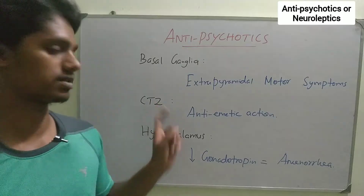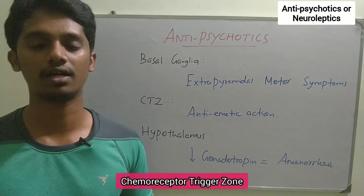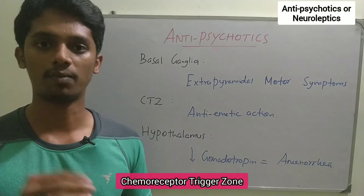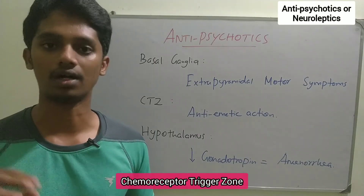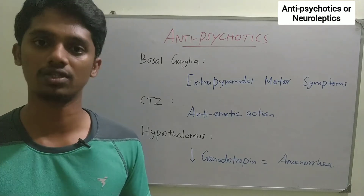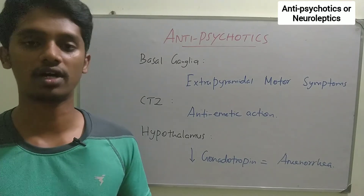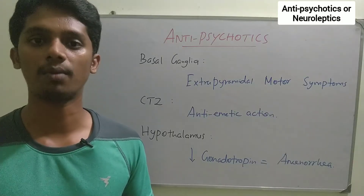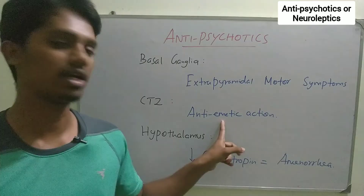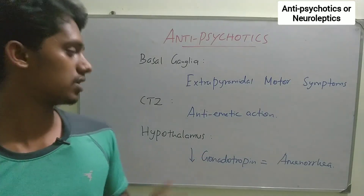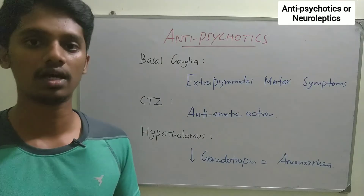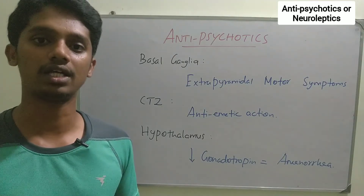Next is the CTZ — the chemoreceptor trigger zone. Normally, when dopamine acts on this zone, a vomiting sensation is produced. But when we block dopamine with the drug, the vomiting sensation is blocked. That is why anti-psychotics also have an anti-emetic action. Chlorpromazine is particularly likely to be used as an anti-emetic.